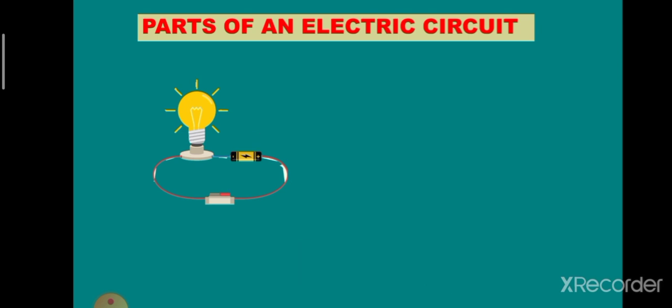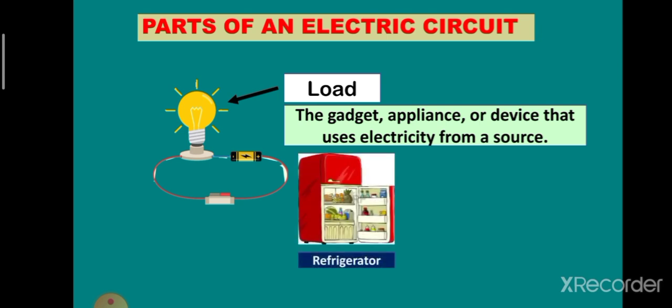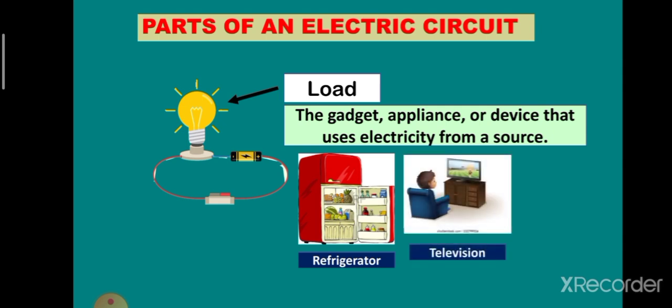The next part is the load. It is the object that uses electricity. It can be a gadget, appliances, or any devices that make use of electricity. In our example, we have a refrigerator, television, and cell phone. In a simple circuit, it is the light bulb.